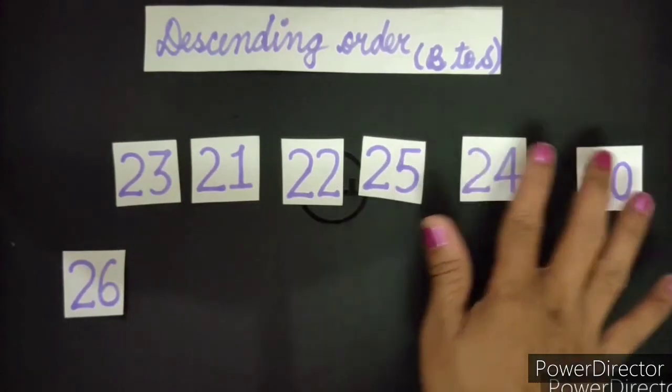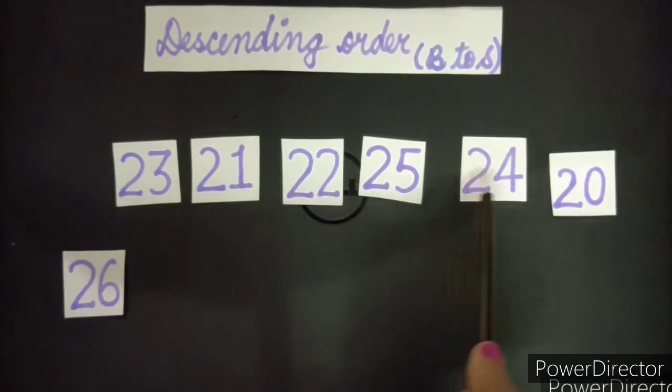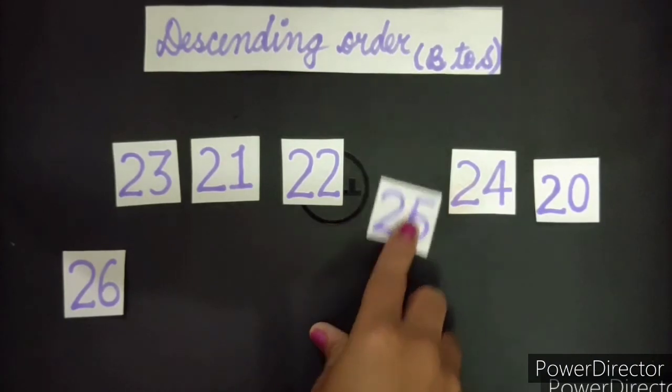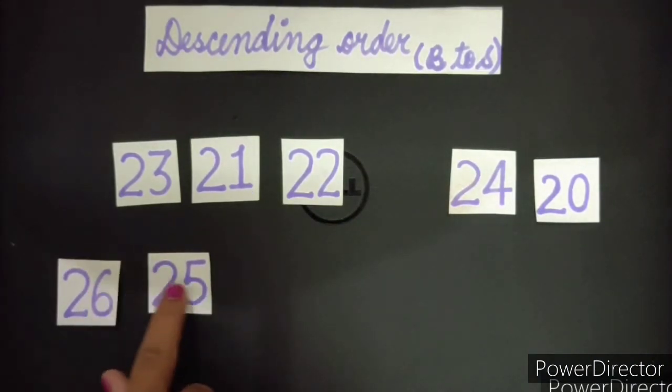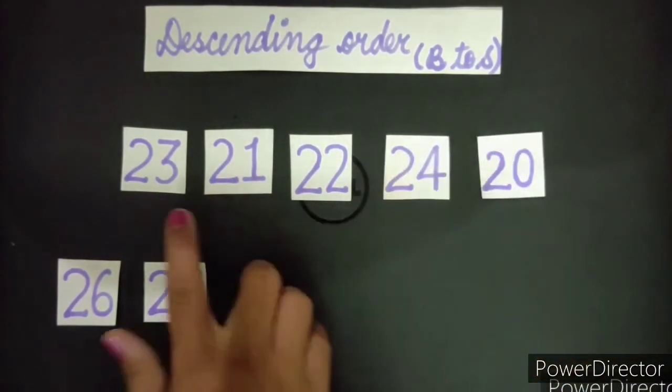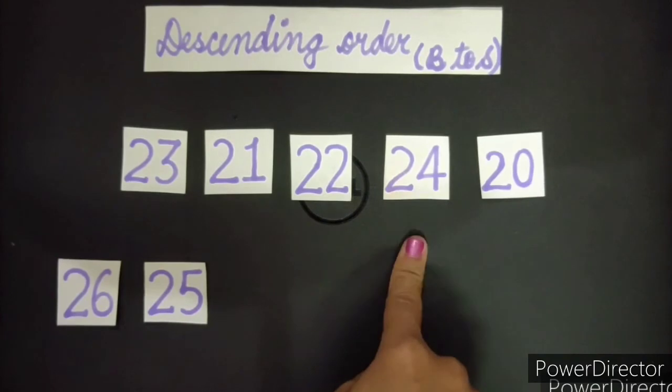Now let's see which one is next greater. 23, 21, 22, 25, 24, 20. Out of all these, which one is the greatest? This 25. 26, 25. Now next. 23, 21, 22, 20, 24. So here it is the greatest.